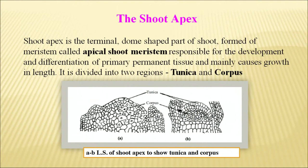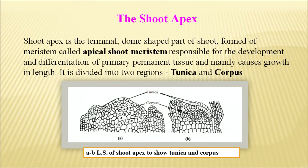The shoot apex is the terminal dome-shaped part of the shoot, formed of meristem called the apical shoot meristem. It is responsible for the development and differentiation of primary permanent tissue and mainly causes growth in length. It is divided into two regions: the upper outer layer called the tunica — meaning the covering and protection — and the corpus, which is the fast-dividing tissue below the tunica.